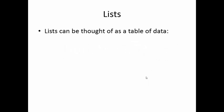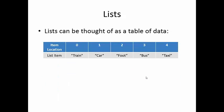A list can be thought of as a very simple table of data. In this table you have got different items: train, car, foot, bus, taxi — and then you have the item location. Please note that when looking at lists, item locations start at 0, so the first item is at location 0, the second is at location 1, and so on.